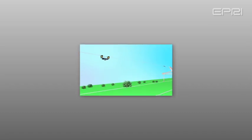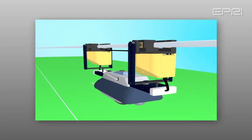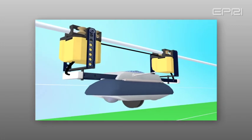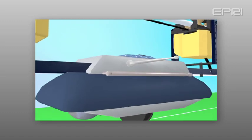To expand inspection capabilities and increase cost-effectiveness, EPRI is developing a transmission line inspection robot permanently installed on and designed to automatically traverse a transmission line twice a year.